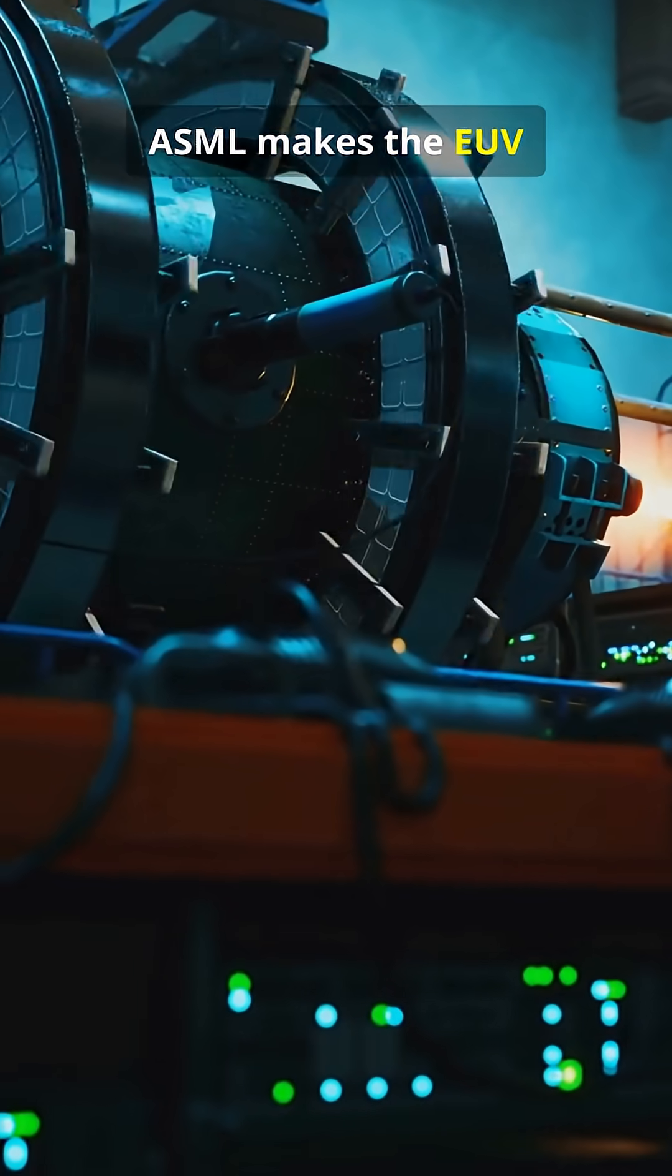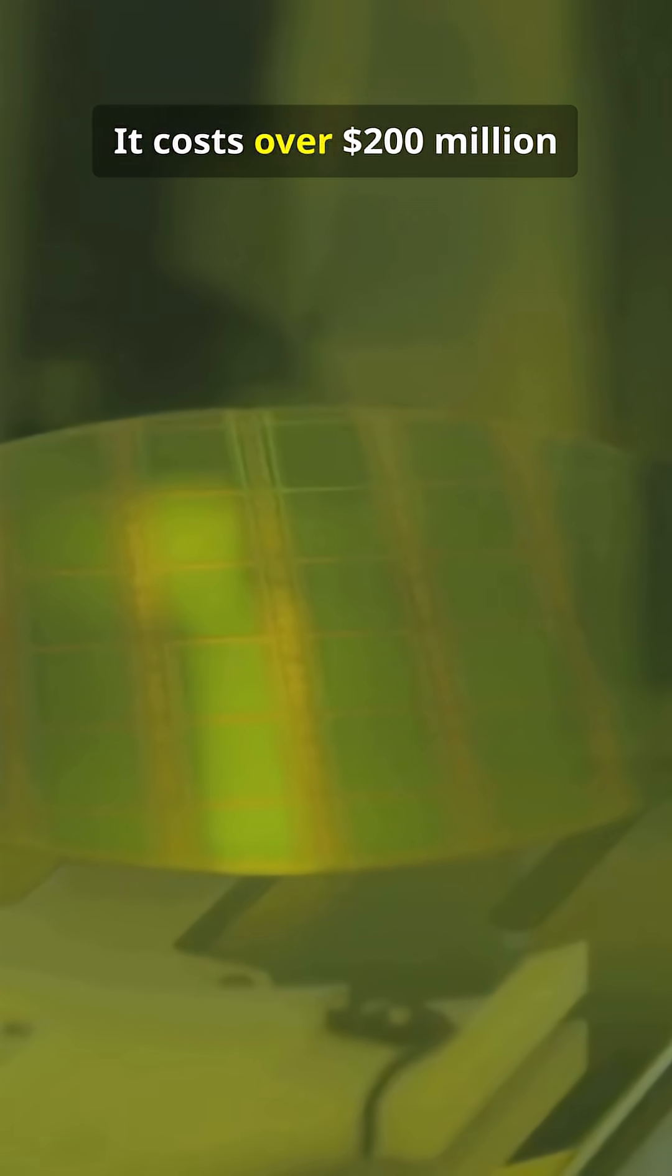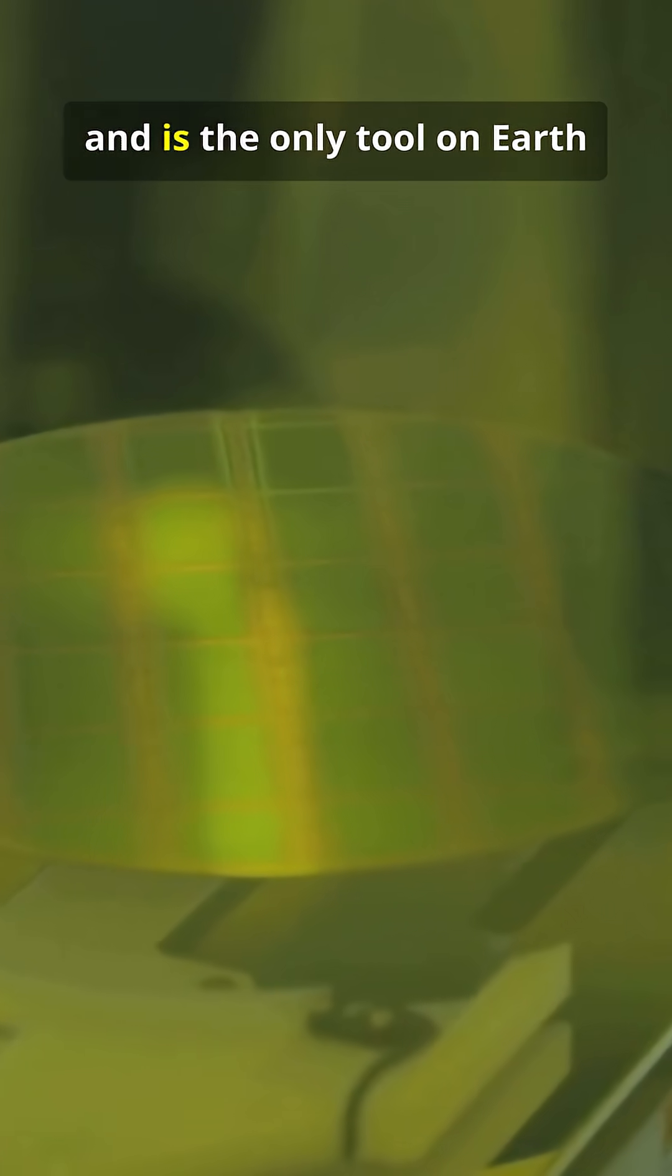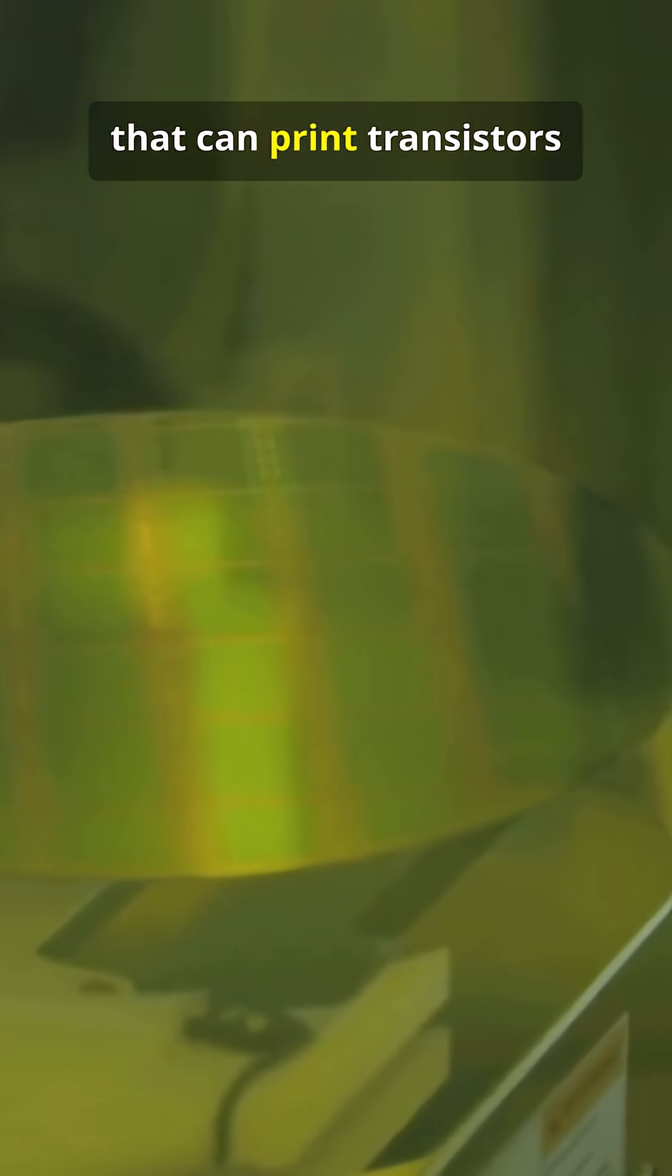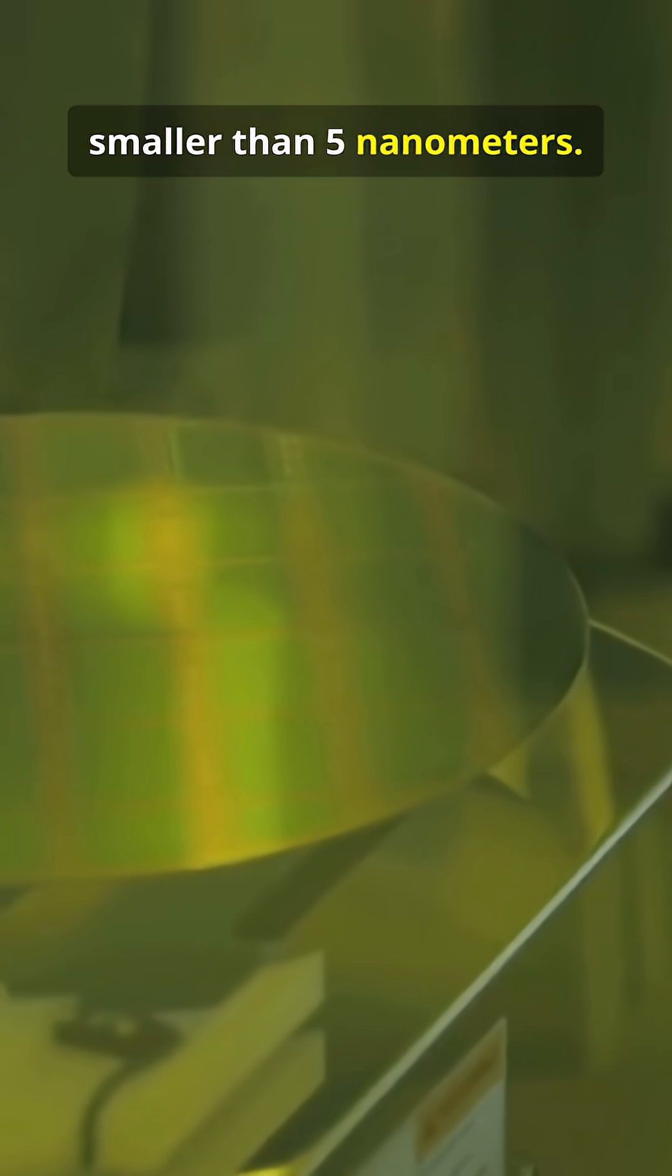ASML makes the EUV lithography machine. It costs over $200 million and is the only tool on Earth that can print transistors smaller than 5 nanometers.